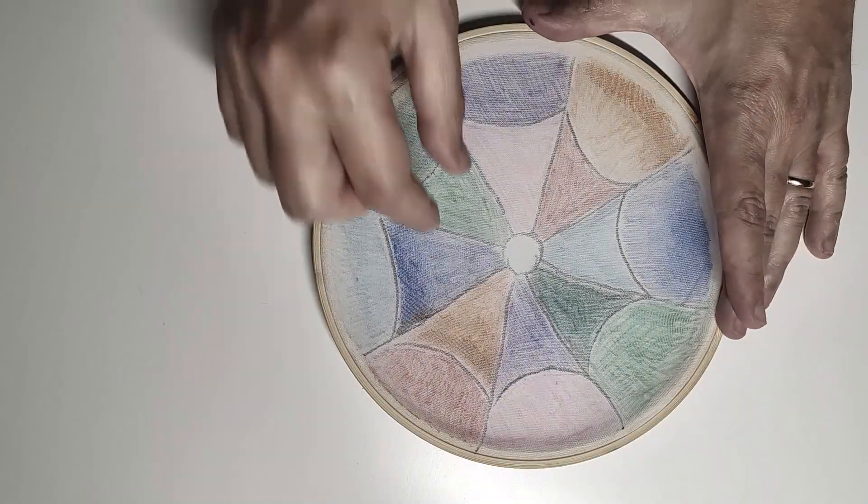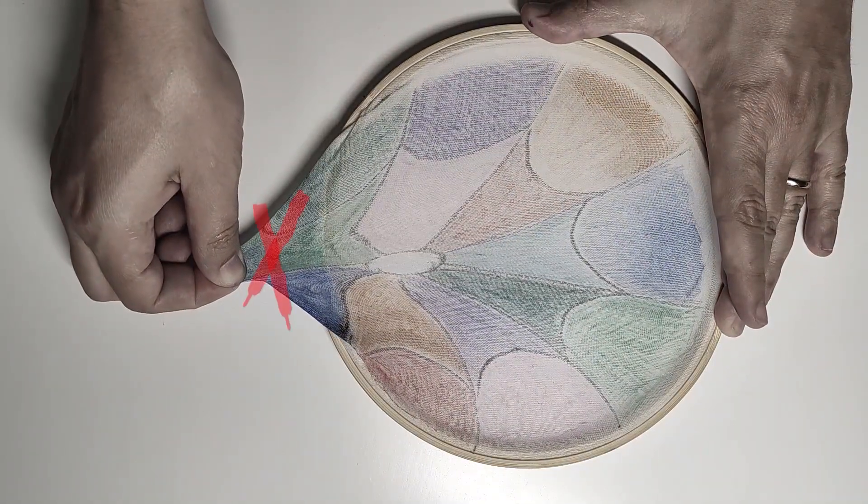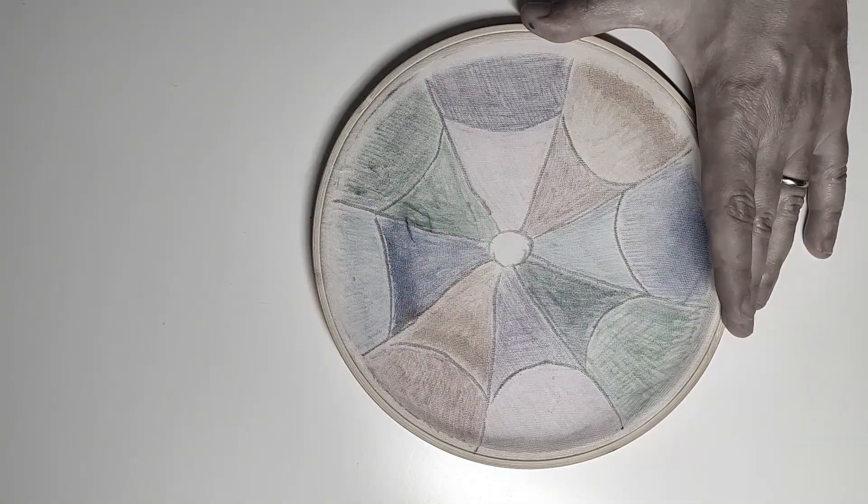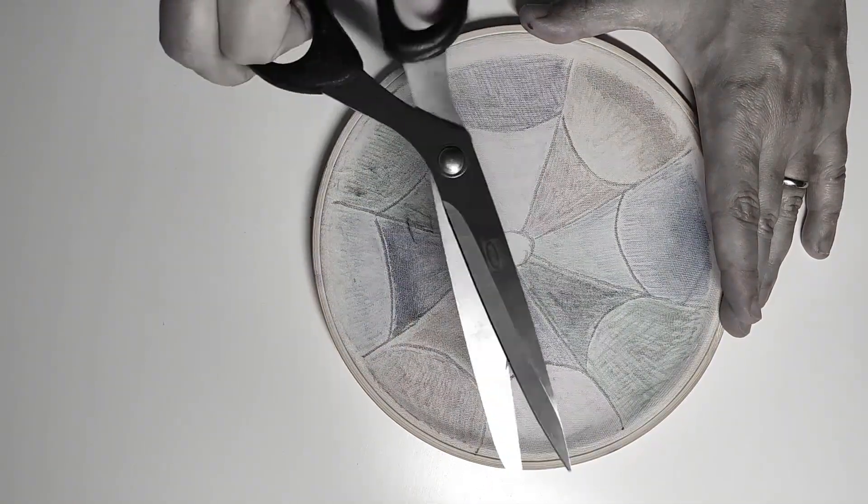The only two things we cannot do are go beyond the boundary of the circular frame or cut or tear the elastic fabric.